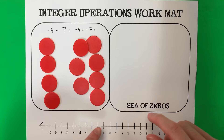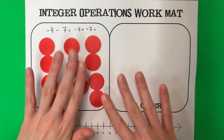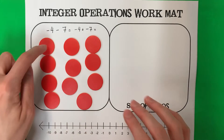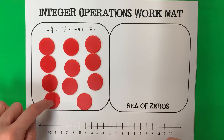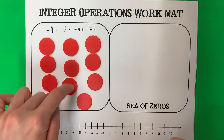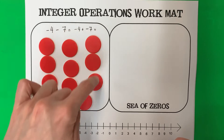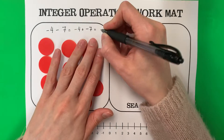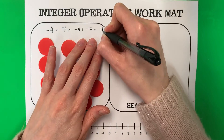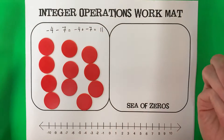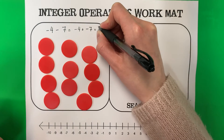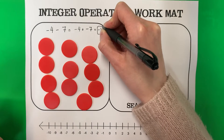So all I have is this. How many buttons do I have in total? Counting them all up, that is 11 reds. Red is negative, so that is negative 11.